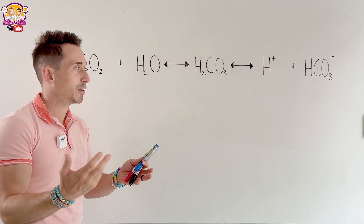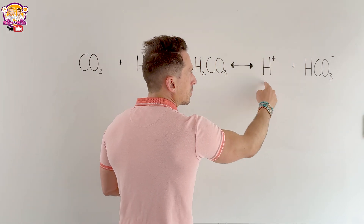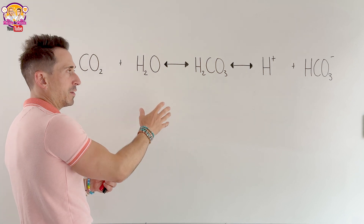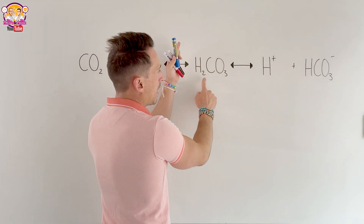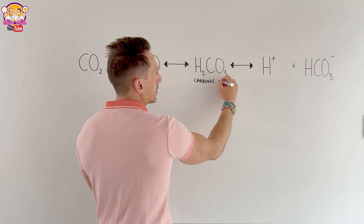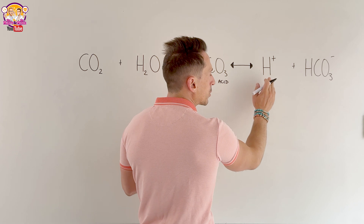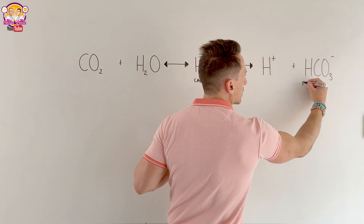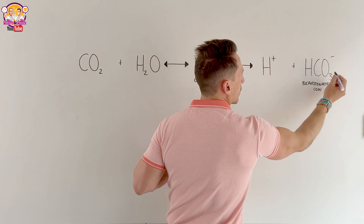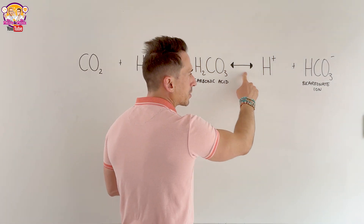Buffers resist changes in pH, and pH is simply a measure of how many hydrogen ions we have. If we have a lot of hydrogen ions we're acidic; if we don't have enough we're basic or alkaline. Carbonic acid hates itself — it splits apart to release hydrogen ions and a conjugate base called bicarbonate ion, because it carries a charge.